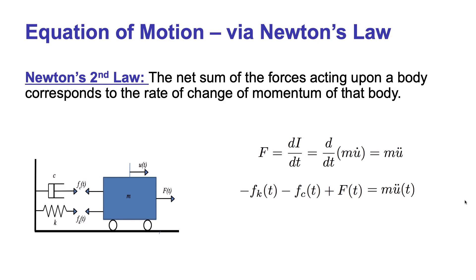If we now look at each one of these terms in more detail, we can see that according to Hooke's law, the spring force F_k will be equal to the spring elongation U, which varies in time, times the stiffness constant k. Likewise, the force in the viscous damper will be proportional to the velocity, and that constant of proportionality will be the damping coefficient c. Therefore, introducing these terms into our previous equation and rearranging, we get to the final expression of our equation of motion.